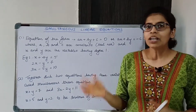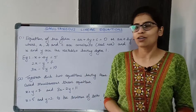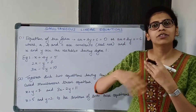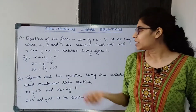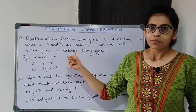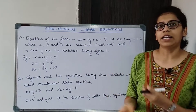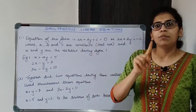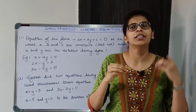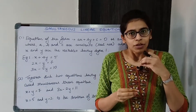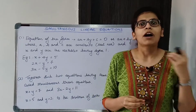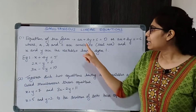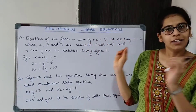X and Y — their values are not fixed, that is why they are called variables. The value of X and Y will keep on changing in the equation, so that is why they are called variables. They have degree 1, meaning the powers of X and Y will be 1. If it does not have power 1, it will not be a linear equation.